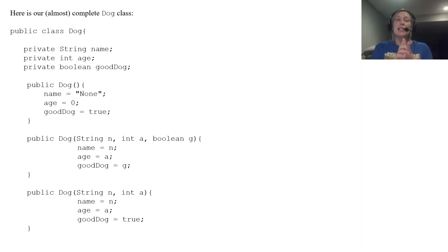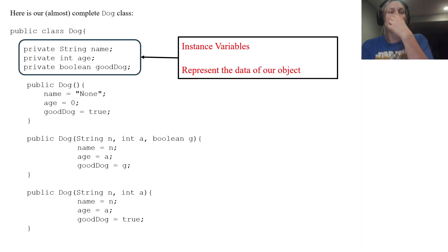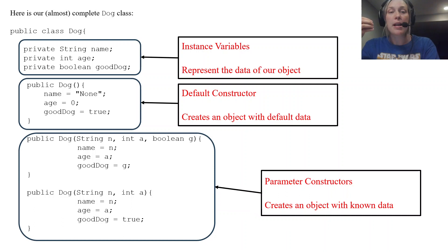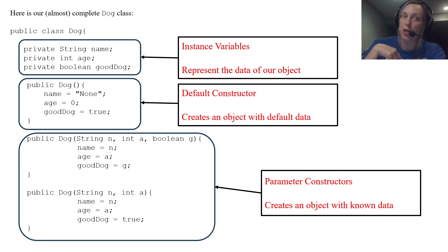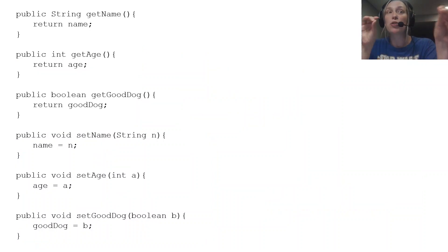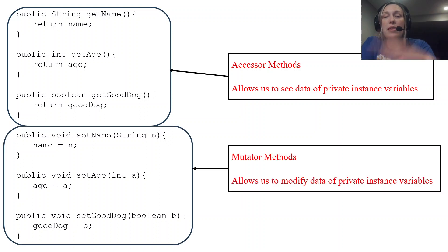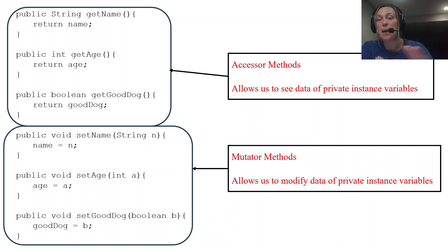Let's review the almost complete Dog class so far. We start off with instance variables representing the data of our object. We have a default constructor that creates an object with default data, and parameter constructors that create an object with known data. We covered these back in unit 2. In unit 5, we learned about accessor methods that allow us to see data of private instance variables — three of them, one per instance variable — and three mutator methods that allow us to modify private instance variable data.